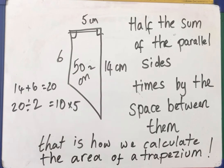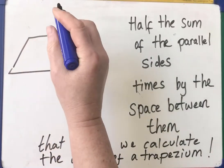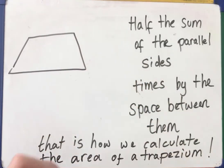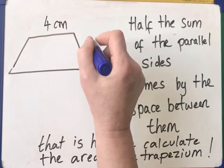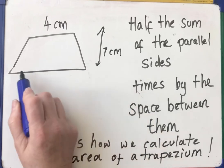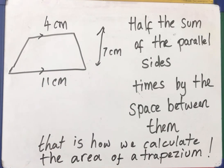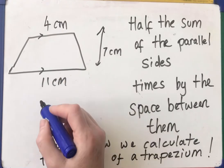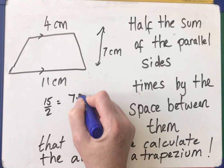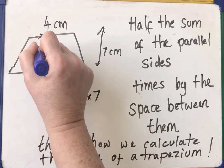Let's have a look at one more. Here's a trapezium — you can use a calculator or not. I'll make the numbers easy, but the process will never change even if the numbers are nasty. Let's have this as 4 cm, the perpendicular height as 7 cm and the parallel side to the 4 is 11 cm. Half the sum of the parallel sides times the space between them — that is how we calculate the area of a trapezium. 4 plus 11 is 15, divided by 2 is 7.5. Then multiply that by 7: 7 times 7.5 is 52.5 cm².